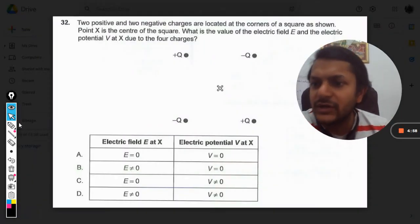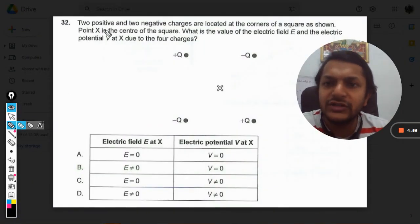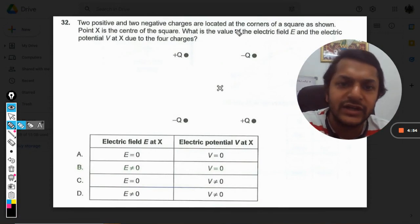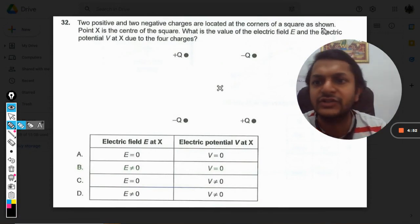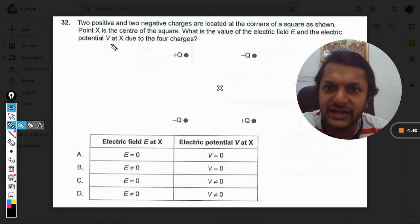Okay dear students, let us see what is in this question. Two positive and two negative charges are located at the corners of a square as shown. Point X is the center of the square. What is the value of electric field E and electric potential V at X due to the four charges?